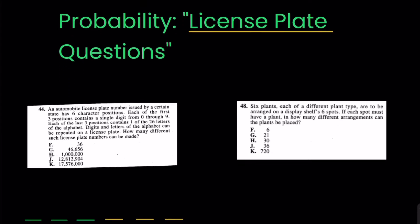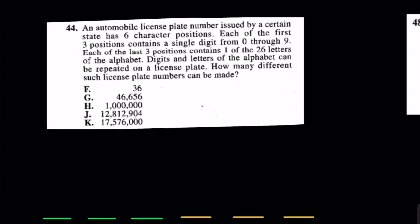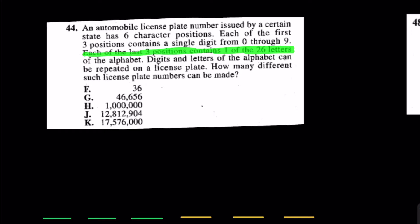Let's take a look at question 44. It says: an automobile license plate number issued by a certain state has six character positions. Each of the first three positions contains a single digit, whereas each of the last three positions contains a letter. There are 26 letters, and they may repeat. How many different license plates can be made?